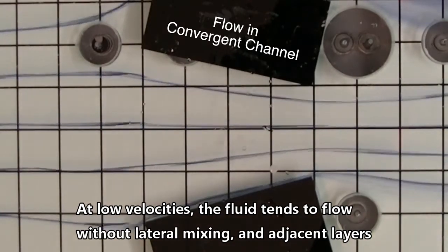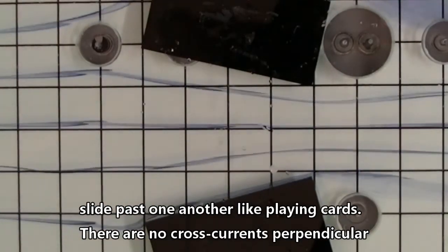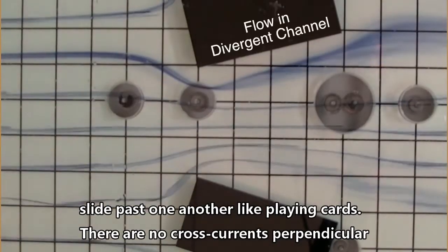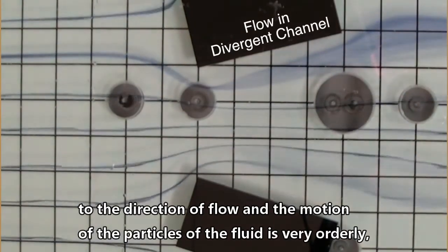At low velocities, the fluid tends to flow without lateral mixing, and adjacent layers slide past one another like playing cards. There are no cross currents perpendicular to the direction of flow, and the motion of the particles is very orderly.